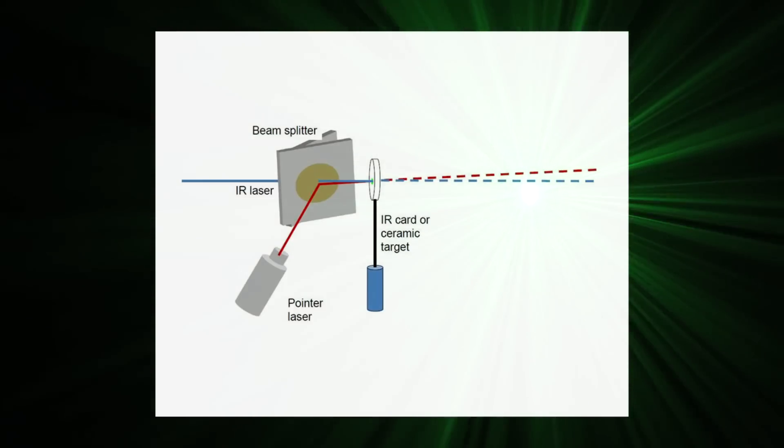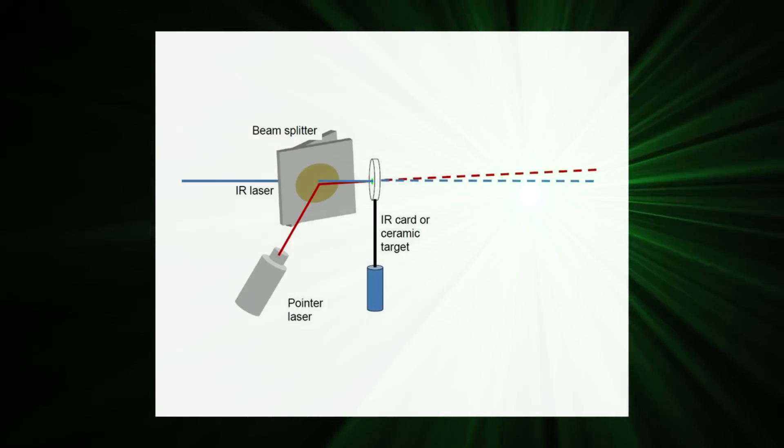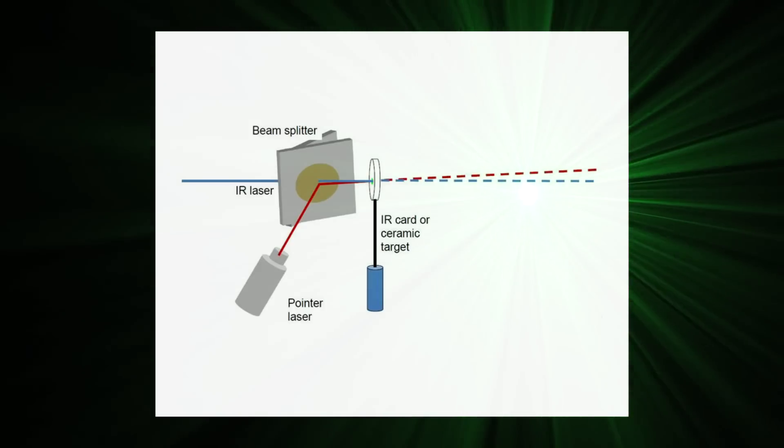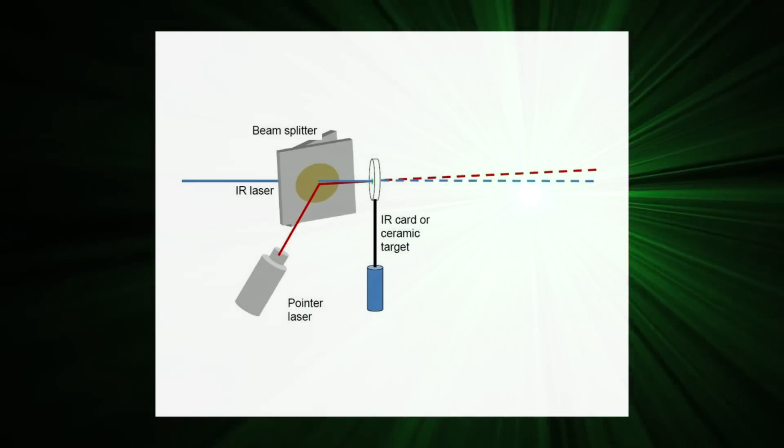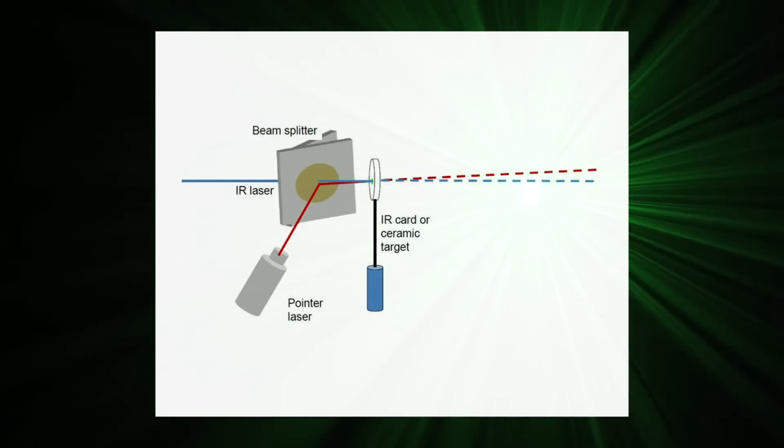Some of the aiming beam will pass through the splitter, and some of the application beam will reflect off it, but by choosing the splitter carefully, any effects of that can be minimized.